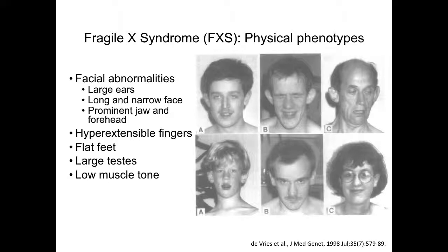The physical phenotype caused by Fragile X syndrome consists of facial abnormalities such as large ears, a long and narrow face, prominent jaw and forehead, hyper-extensible fingers, flat feet, large testes in men, and low muscle tone. All of the people in this picture have Fragile X syndrome with varying degrees of severity.